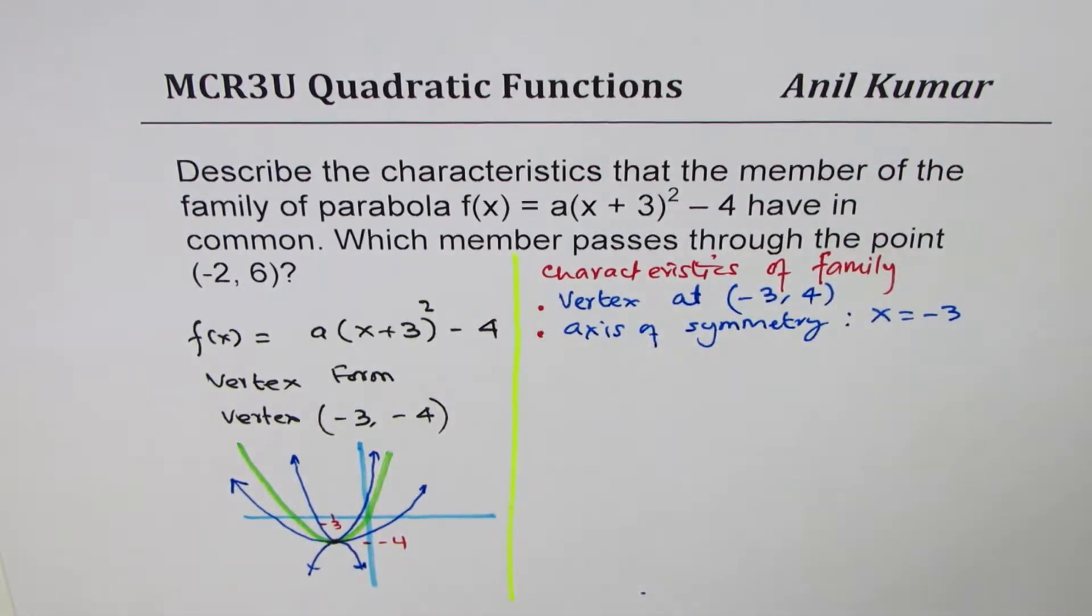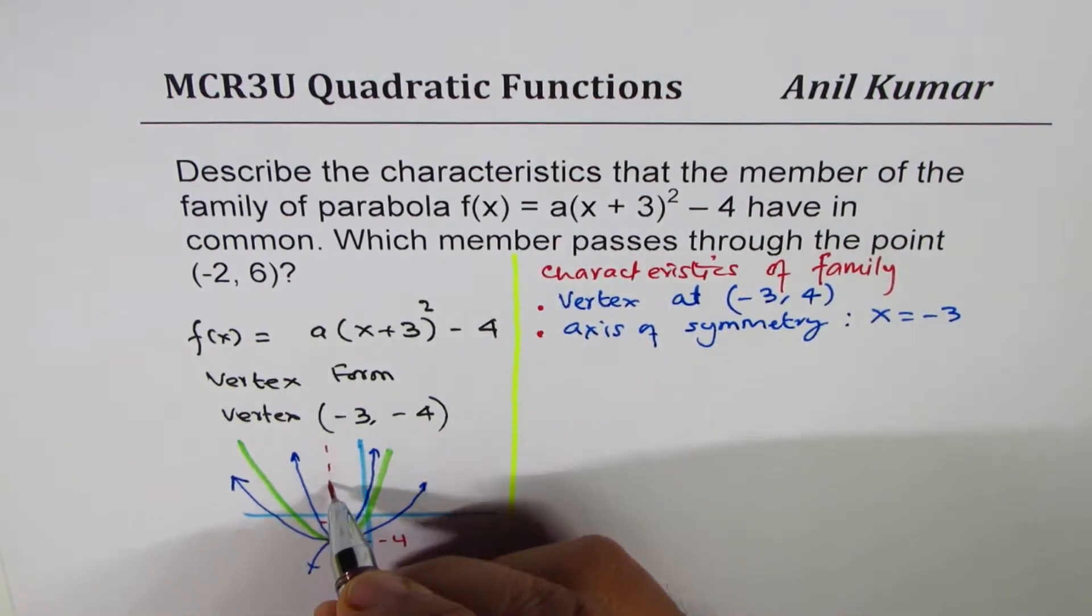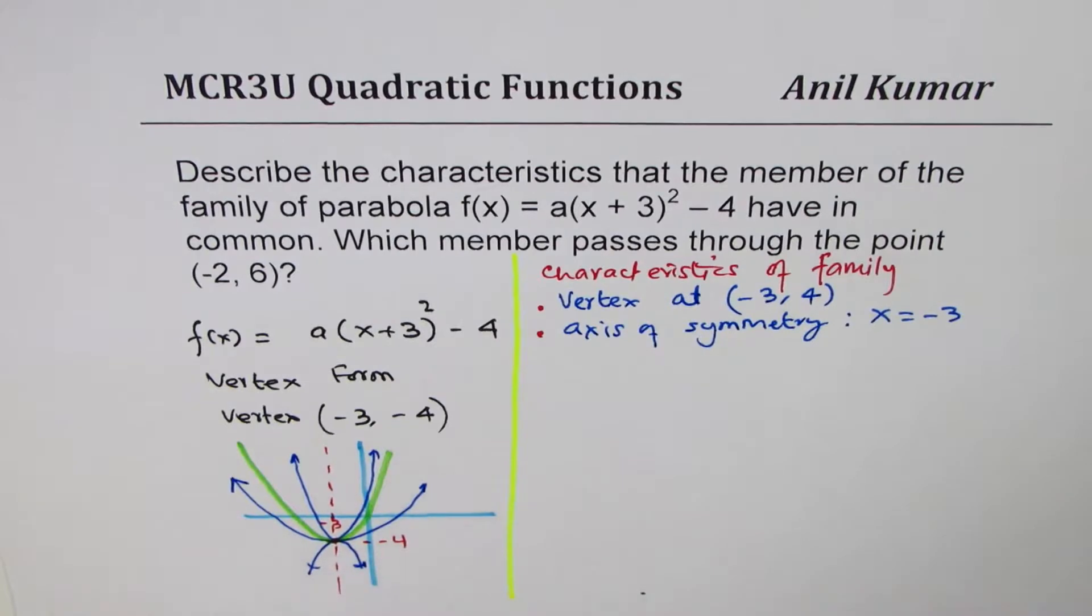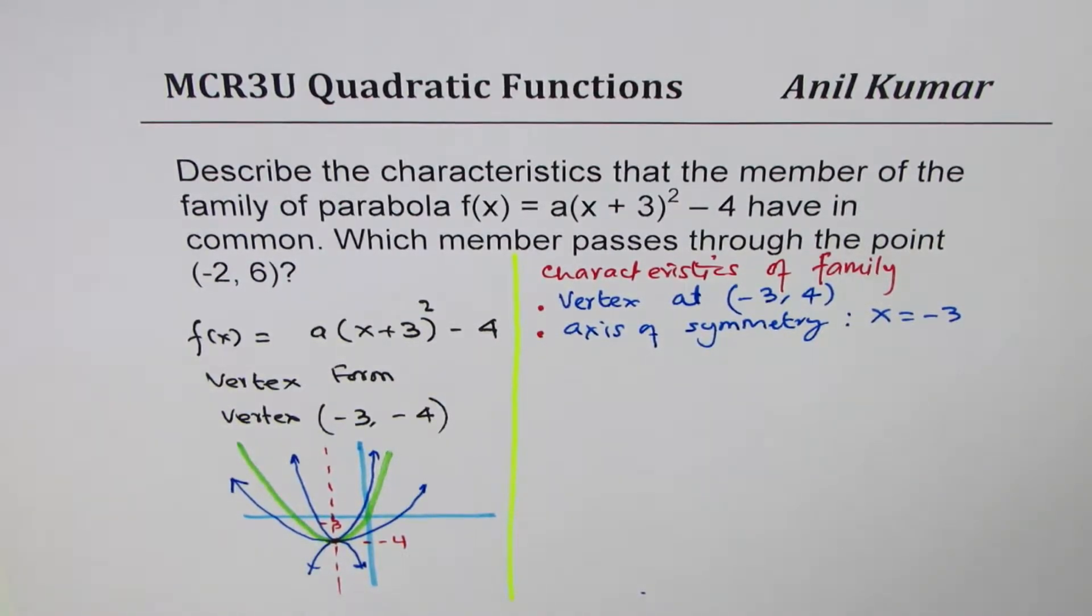So the second one is axis of symmetry. So you can say for every parabola, the axis of symmetry will be this vertical line going through -3, x = -3. So that is how you can answer the first half.